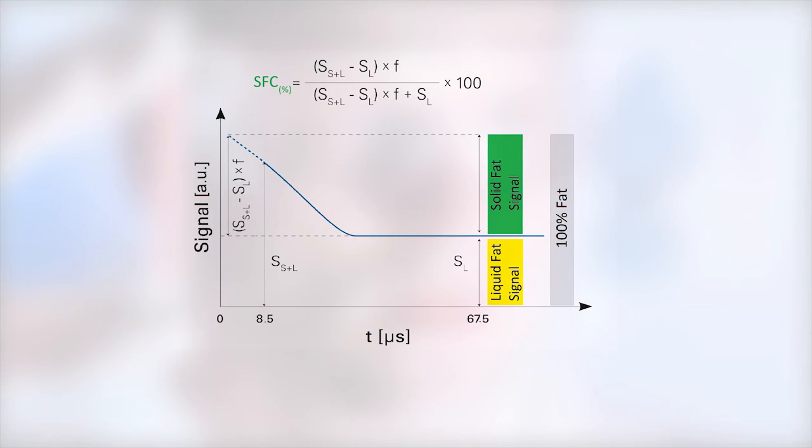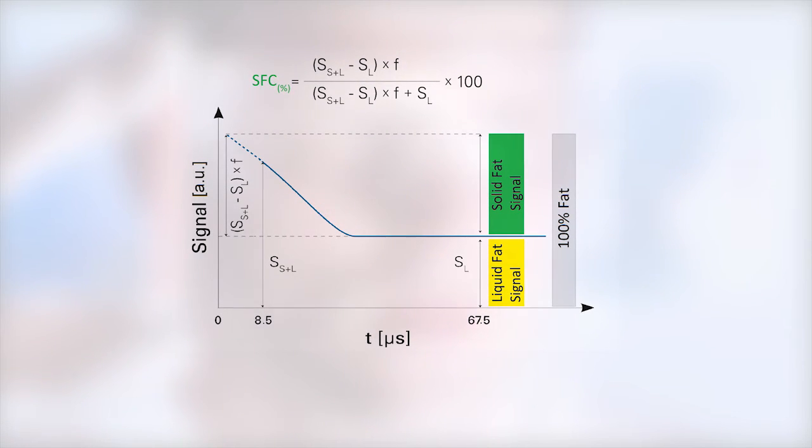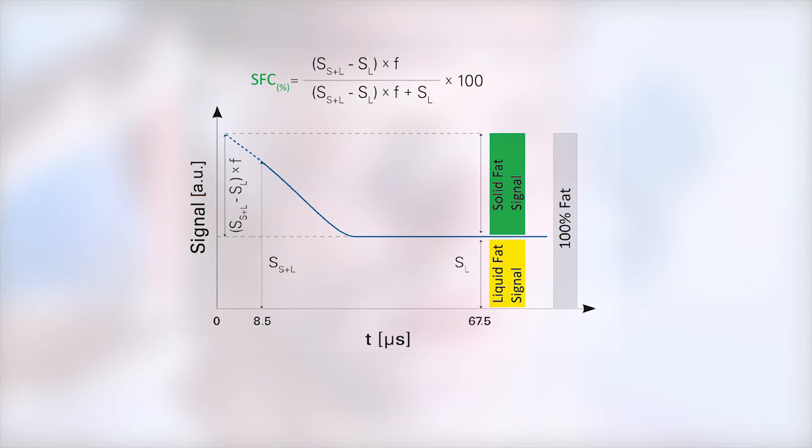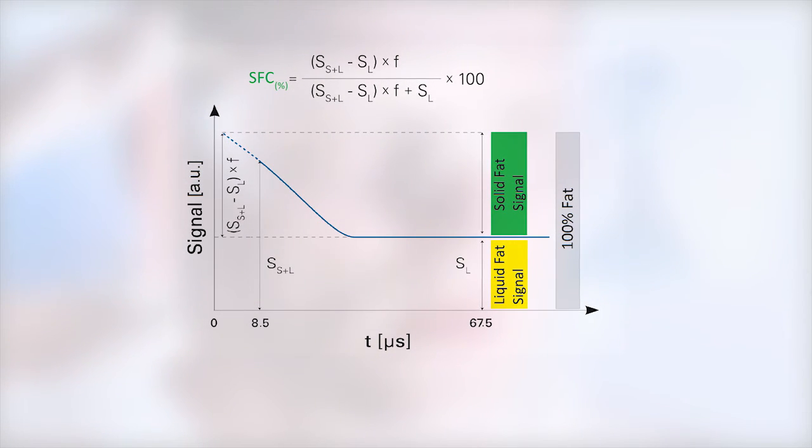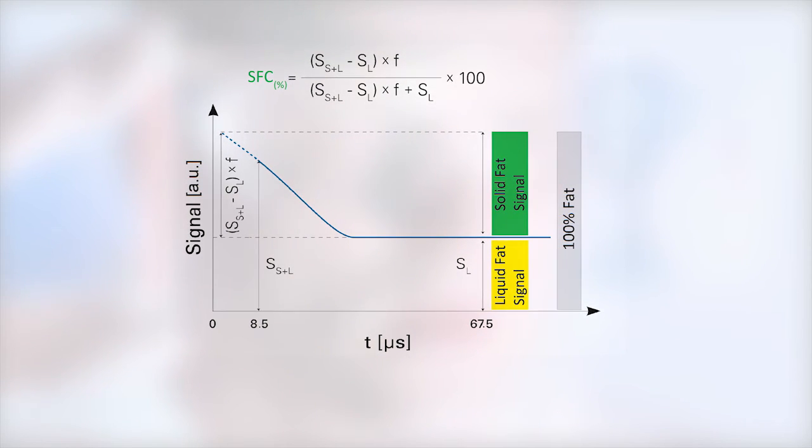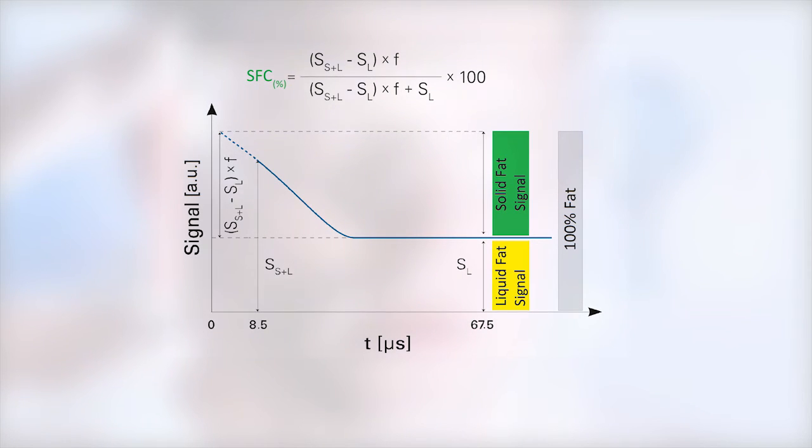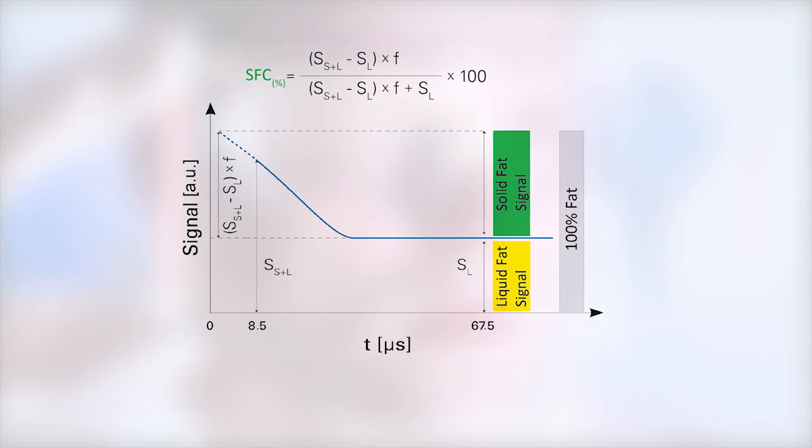The SFC value is defined according to the international standard methods as the ratio of the signal from the solid component divided by the total NMR signal. Measuring this parameter at various temperatures yields valuable information on the melting behavior.